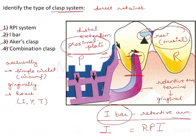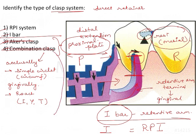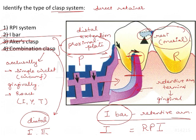To eliminate the other options: acres clasp and combination clasp are both occlusally approaching clasp arms. In the image we can clearly see a gingivally approaching clasp, so both are automatically eliminated. Note that combination clasp is valid for distal extension cases — Kennedy's class 1 and class 2 — so it may cause confusion here. However, since the image shows a gingival approaching clasp arm, that leaves us with RPI system and I-bar.